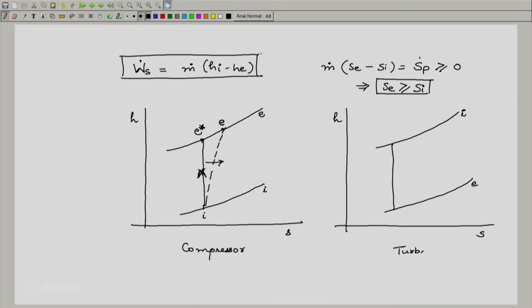If you're considering a turbine, the inlet is here, the exit is here. This is the ideal exit state at the same entropy as the inlet. If it was a real process, you would go towards increasing entropy, and the real process would be something like this. This e is the real exit state.